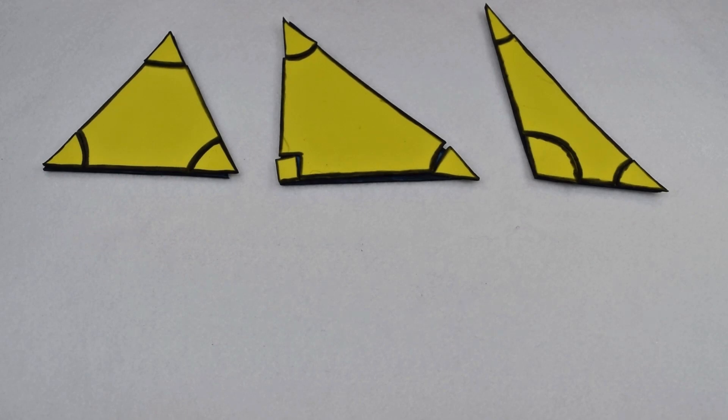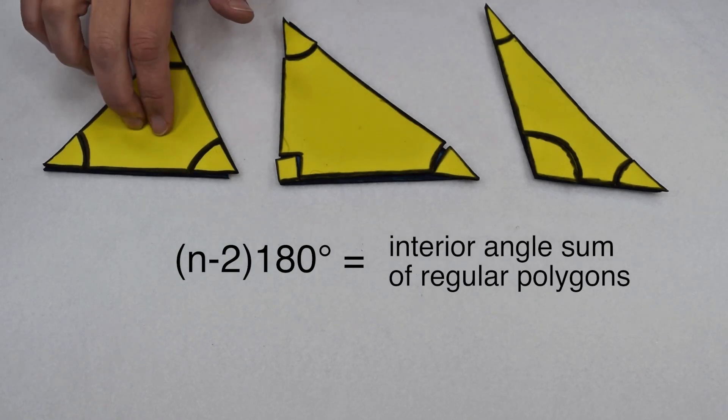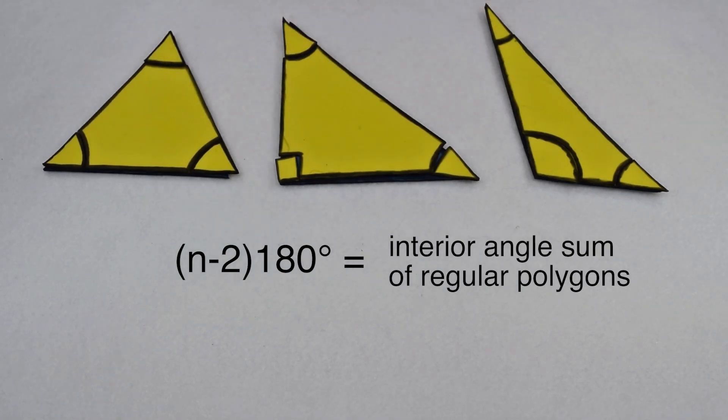We found that we can use the equation the number of sides minus 2 times 180 to find the interior angle sum for regular polygons. Now we're going to look to see if that's true for just regular polygons or if that's going to be true for any polygon.